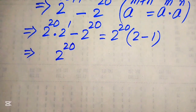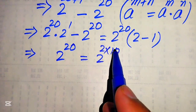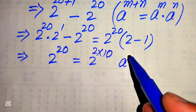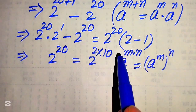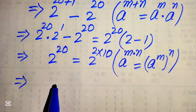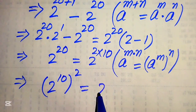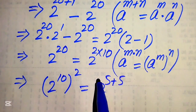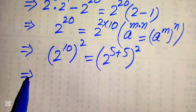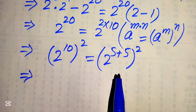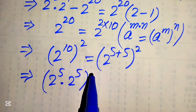Now we need to break down 2 to the power of 20 further. We write 20 as 2 times 10, then apply the exponent law: a to the power of m times n equals a to the power of m, to the power of n. According to this law, we move the 10 inside and it becomes 2 to the power of 10, whole squared. We then rewrite 2 to the power of 10 as 2 to the power of 5 plus 5, whole squared, and apply the first exponent law again to break these exponents.